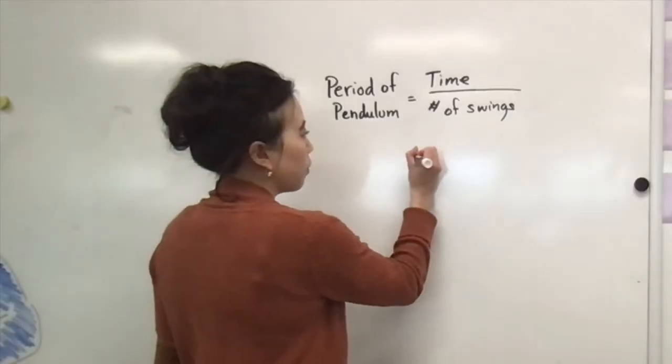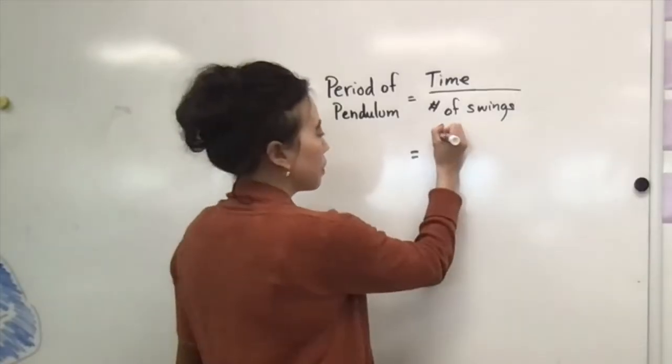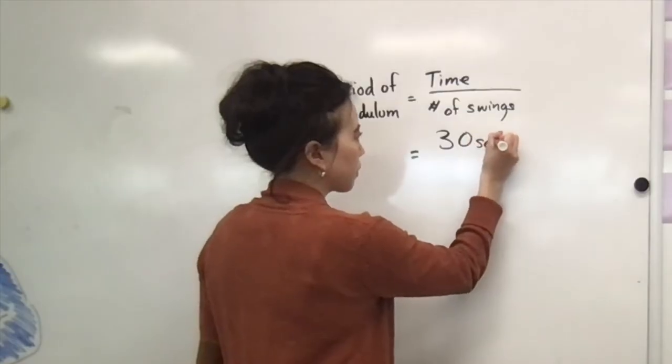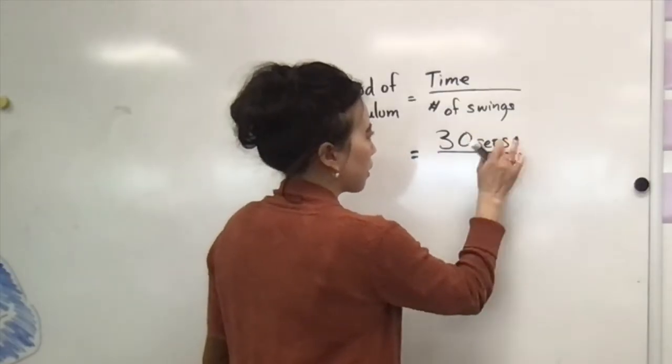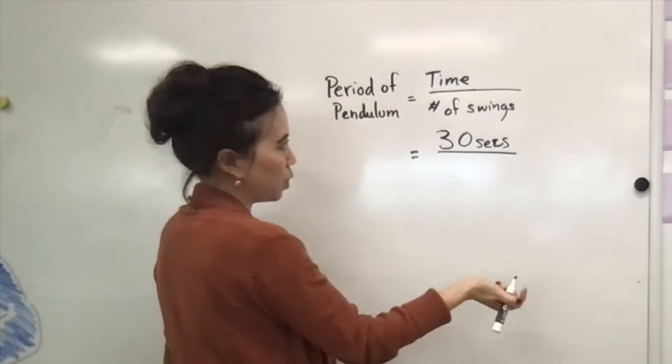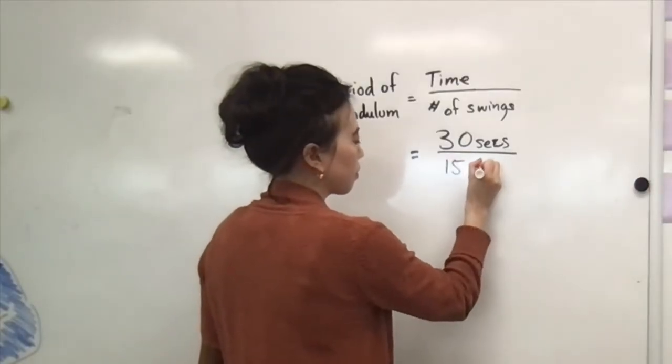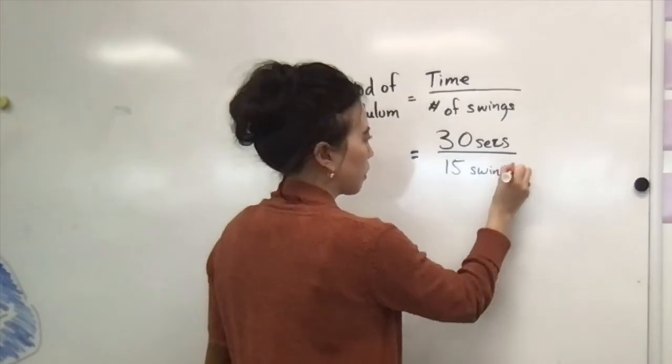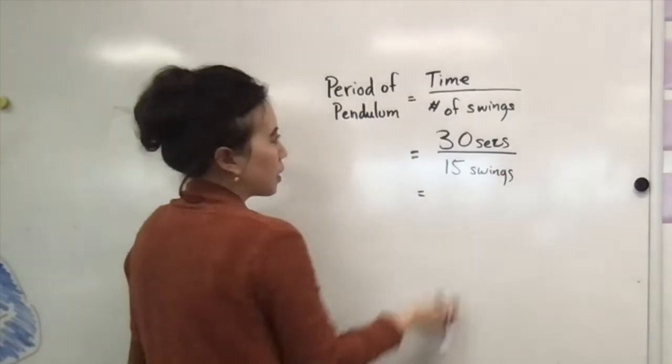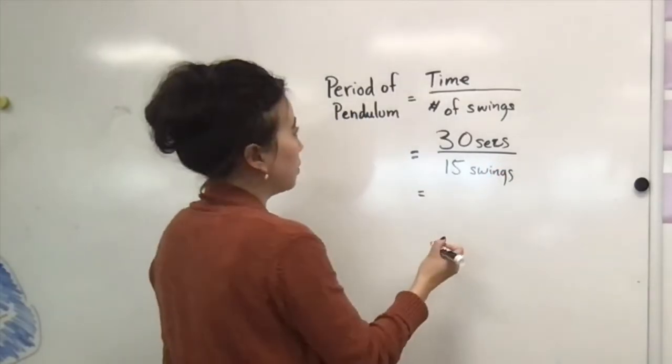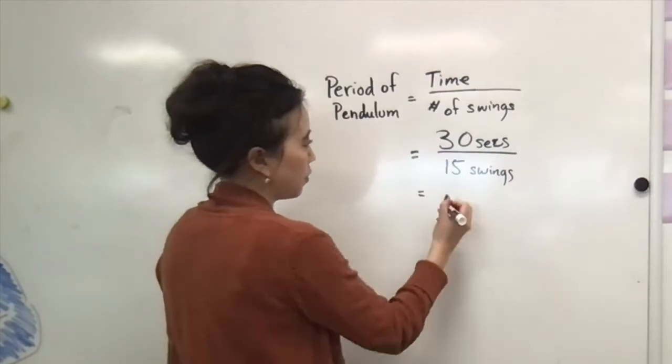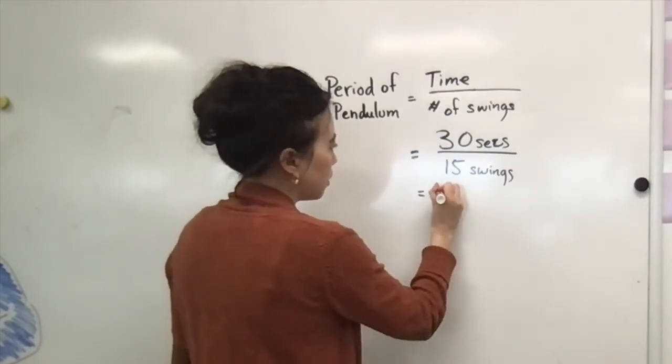So for instance, if you time the pendulum for 30 seconds and you got 15 swings, that means the period of your pendulum is 30 divided by 15, which equals 2 seconds.